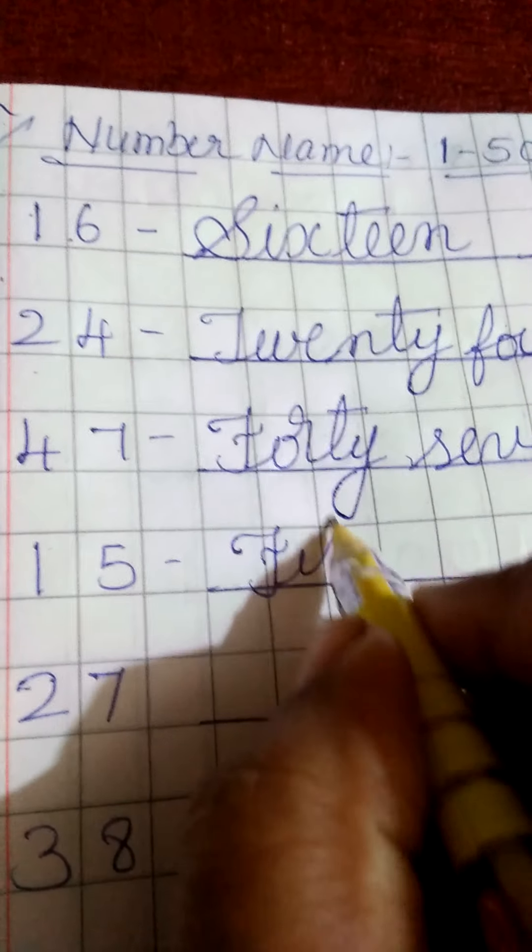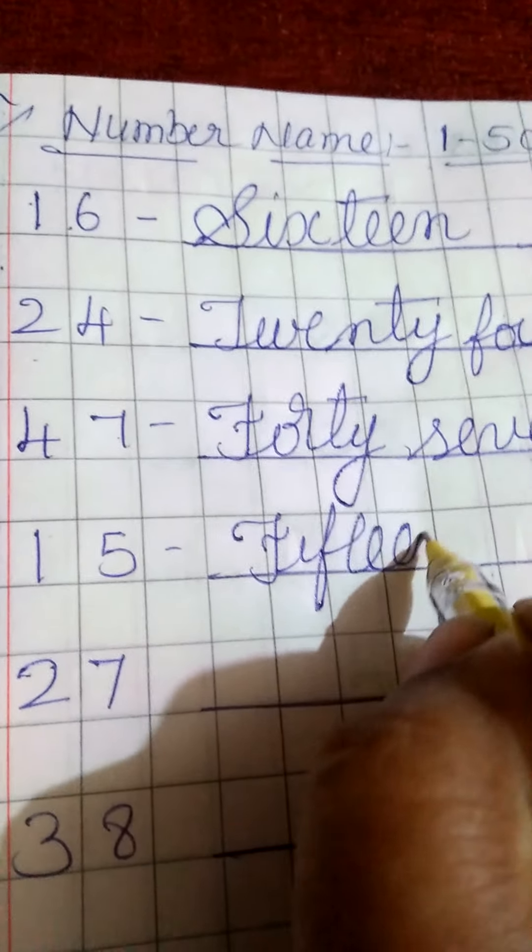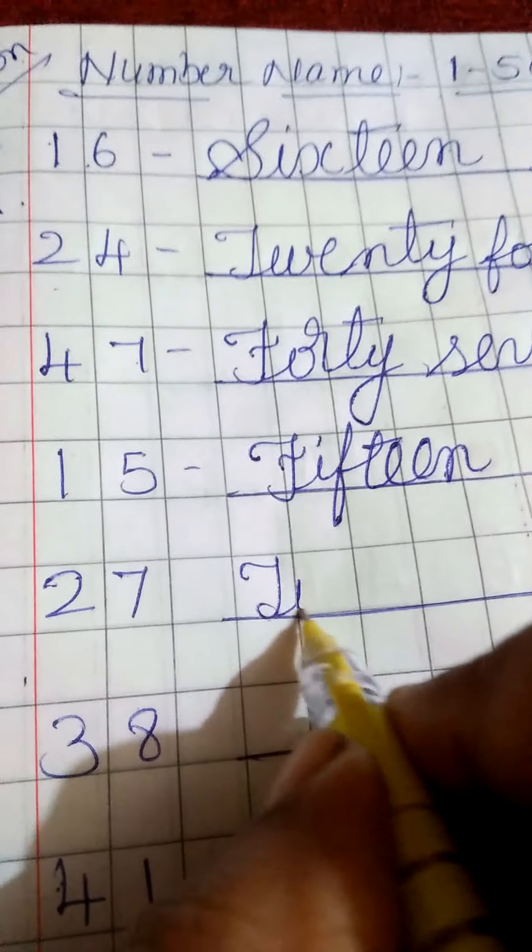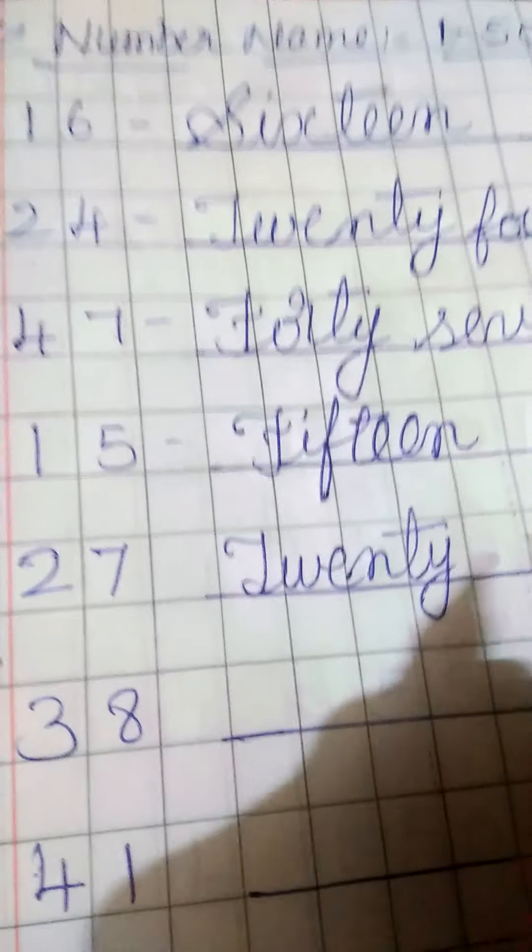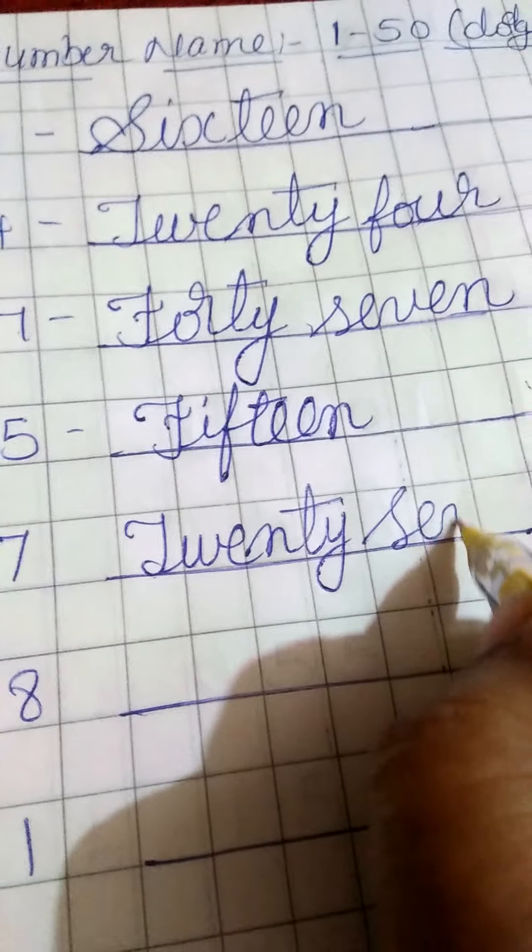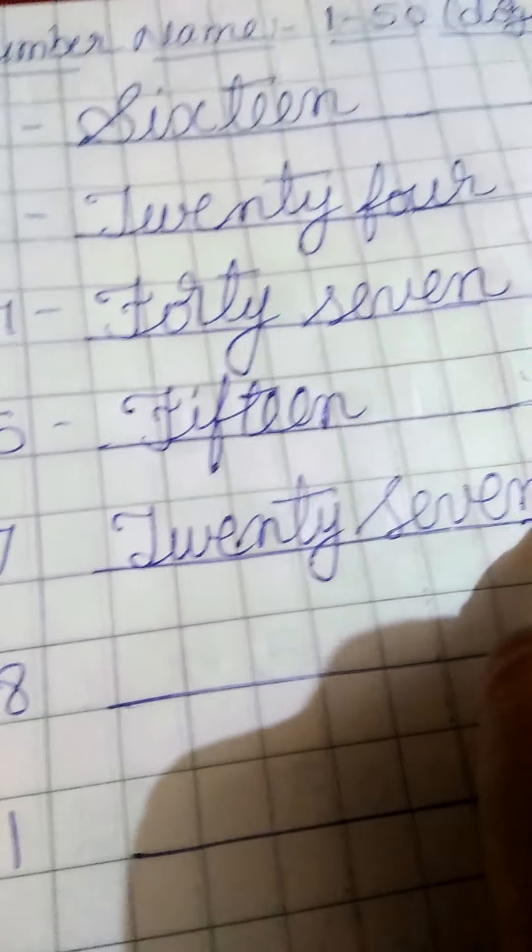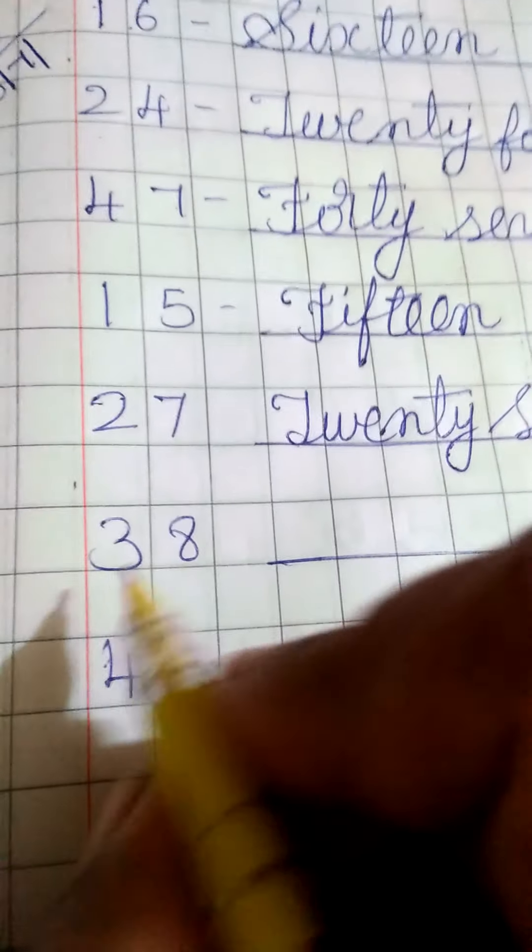F-I-F-T-E-E-N, fifteen. Next 27. T-W-E-N-T-Y, twenty. S-E-V-E-N, seven. Next 38.